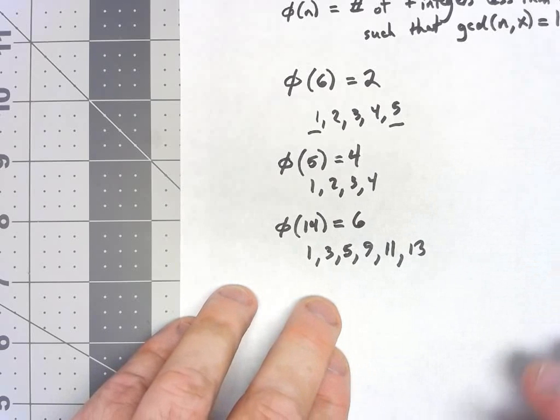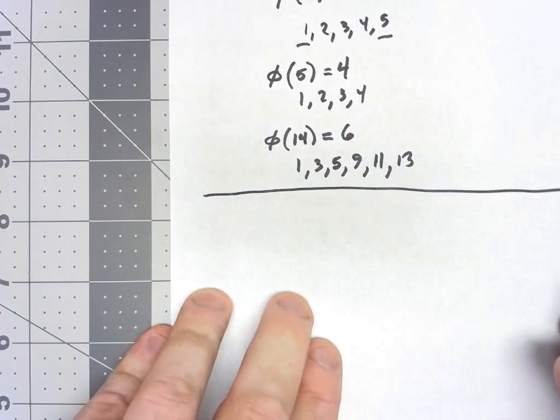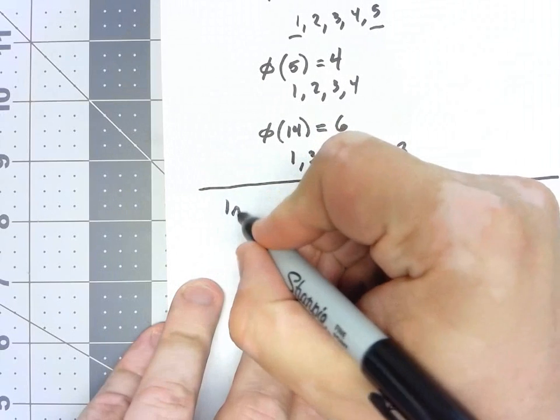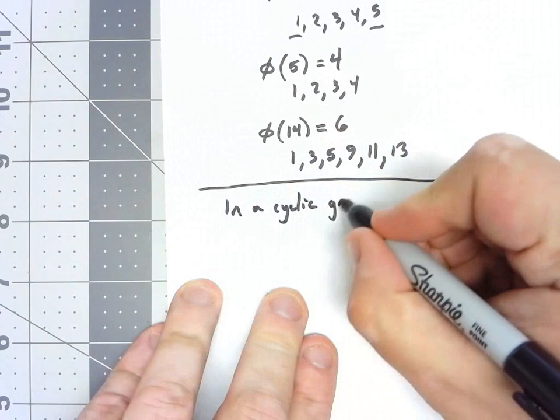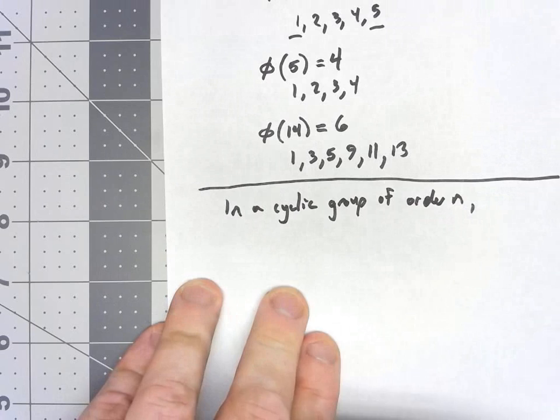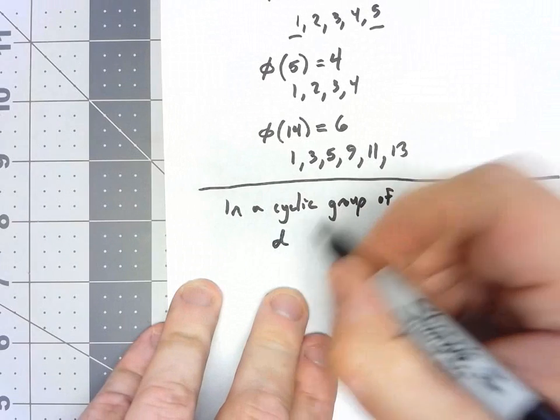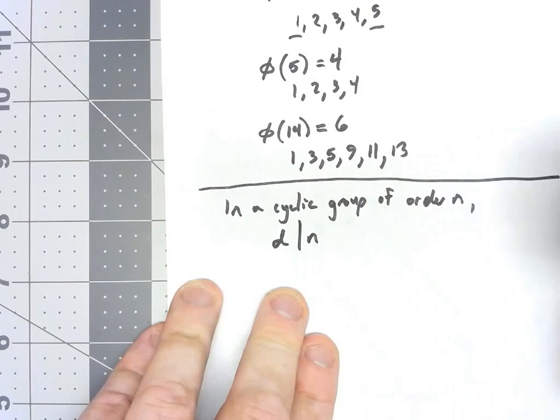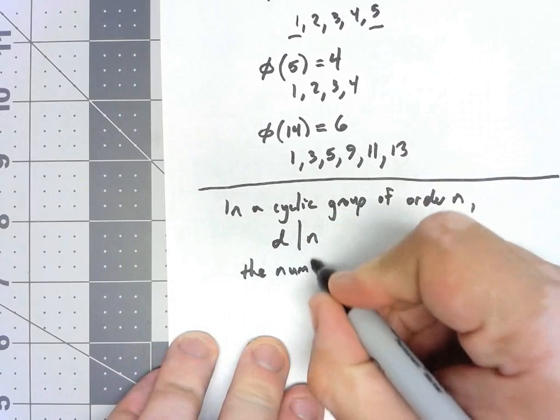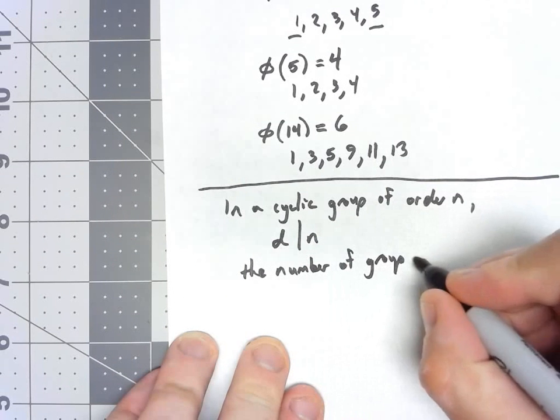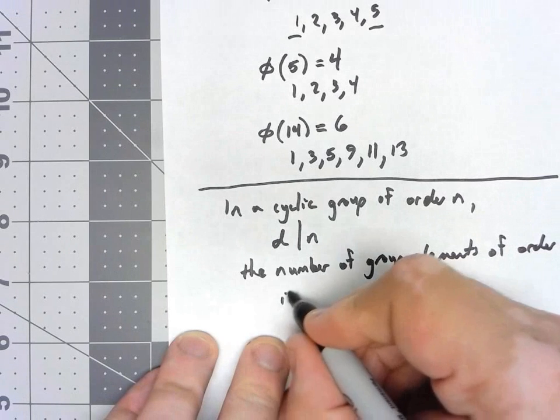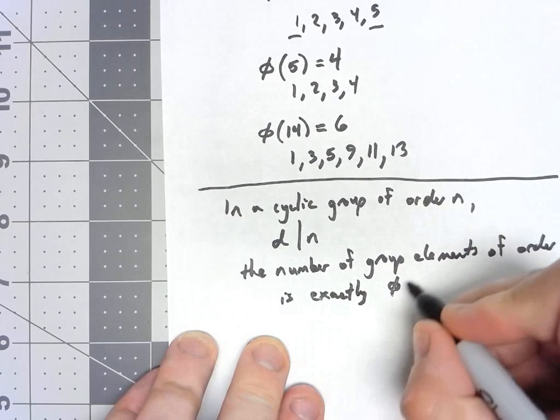So why do I bring this number theory thing up? Well, there are a couple of important things we can calculate using this Euler phi function. First of all, in a cyclic group of order n, let's say d is some number that divides n. Then we can say the number of elements of order d is exactly φ(d).